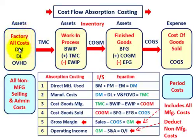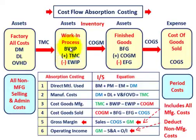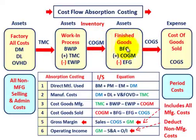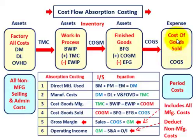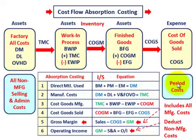Going back to the cost flow: direct materials, direct labor, and fixed and variable factory overhead are accumulated as total manufacturing costs. They flow into work in process inventory. We start with beginning work in process, add total manufacturing costs, and subtract ending work in process to get cost of goods manufactured. Those cost of goods manufactured flow into finished goods — beginning finished goods plus cost of goods manufactured minus ending finished goods equals cost of goods sold — which is then matched against sales for the period. All non-manufacturing selling and administrative costs are expensed as period costs.